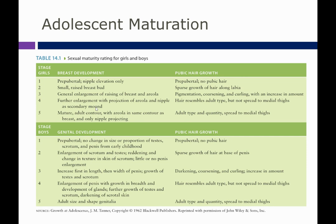For boys' genital development: stage one is pre-pubertal with no change in size from early childhood; stage two, enlargement of scrotum and testes with reddening and texture change and little penis enlargement; stage three, increase first in length and then width of penis and growth of testes and scrotum; stage four, enlargement of penis with breadth, development of glands, further growth of testes and scrotum, and darkening of scrotal skin; stage five, adult size and shape genitalia. For pubic hair in boys: stages progress similarly from no pubic hair at stage one to sparse growth at the base of the penis, then darkening and coarsening, then adult type not spread to thighs, and finally adult type spread to the medial thighs at stage five.